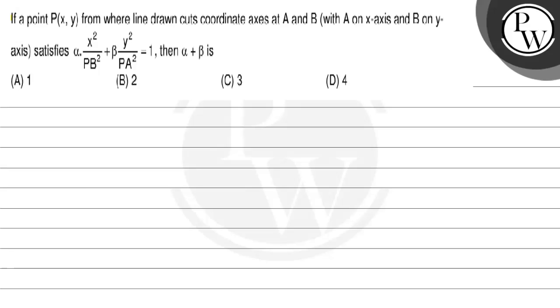Hello bacham, let us read the question. If a point P(x,y) from where line drawn cuts coordinate axes at A and B with A on x-axis and B on y-axis satisfies α·x²/PB² + β·y²/PA² = 1, then α + β is: option A) 1, option B) 2, option C) 3, option D) 4.